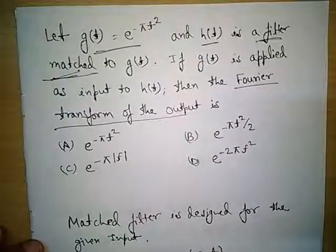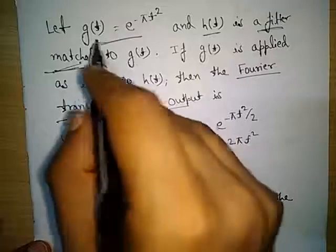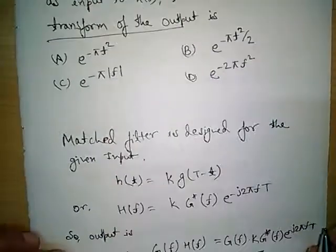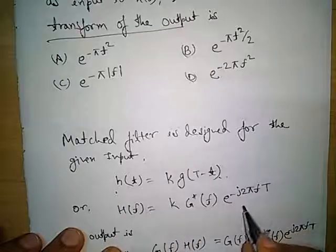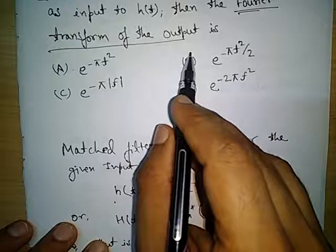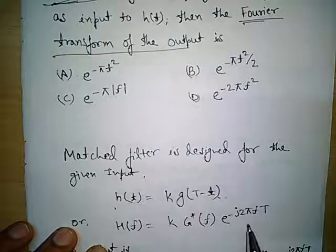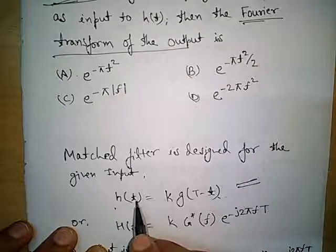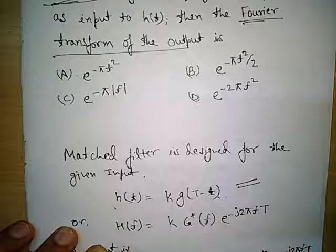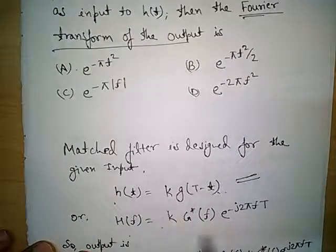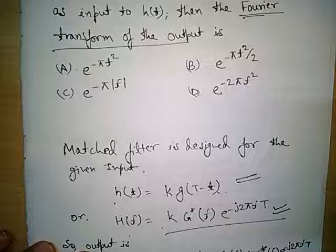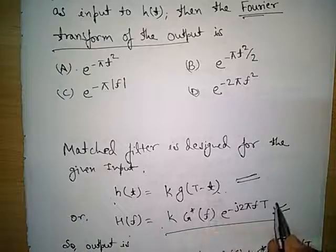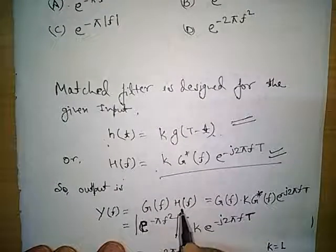Now coming to the given problem: the given signal is g(t) = e^(-πt²), so the matched filter impulse response will be s(t) = k·g(T - t). Since we have to find the Fourier transform of the output, better we take it in the frequency domain. In the frequency domain, the transfer function is H(f) = k·G*(f)·e^(-j2πfT), where G*(f) is the conjugate of the Fourier transform of g(t). The output will be the product of G(f) and H(f).